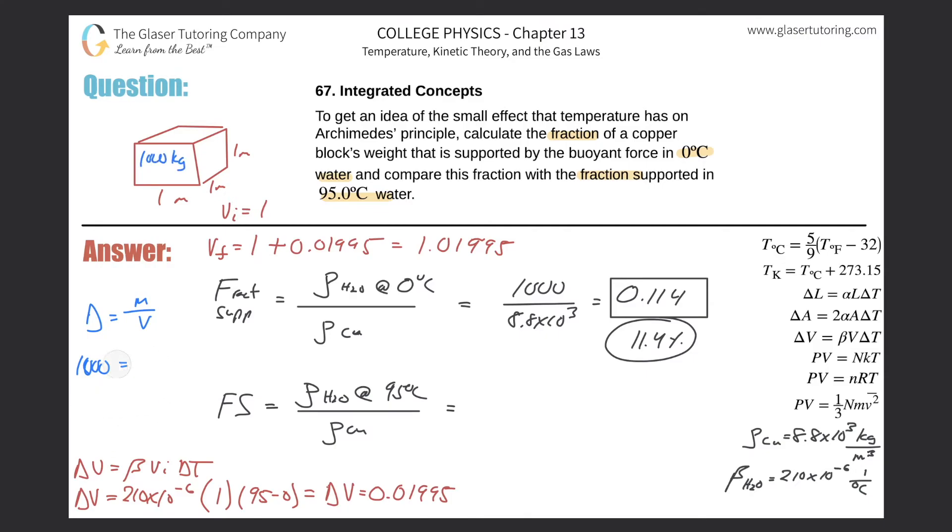Now what's going to happen is the mass has stayed the same, 1000, but the volume has now increased to 1.01995, and now we can calculate this new density. So we'll take 1000 and divide it by that value, and it works out to be about 980. So this is now 980 kilogram per cubic meter.